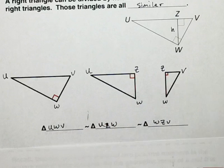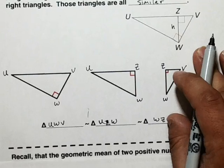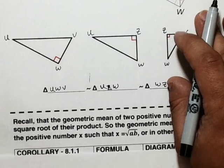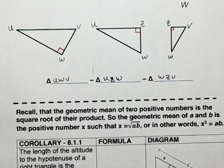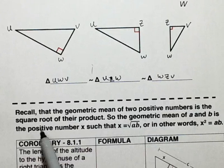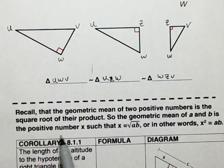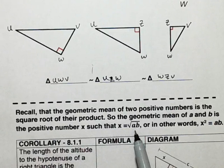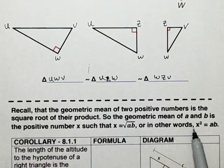These three triangles are all similar, which means the sides are proportional. We're going to use what we talked about in chapter 7, called geometric mean. Recall that the geometric mean of two positive numbers is the square root of their product. So the geometric mean of A and B is a positive number X such that X equals the square root of AB, or in other words, X squared equals AB.